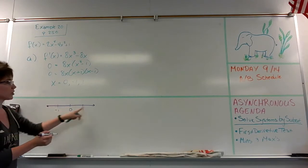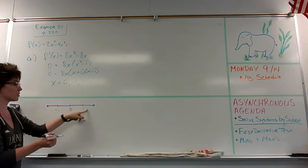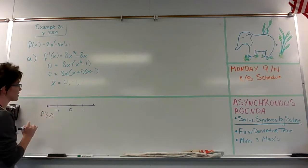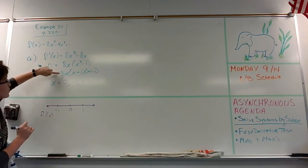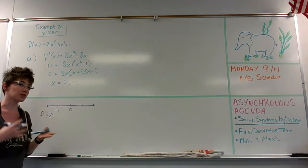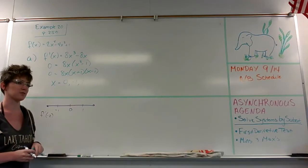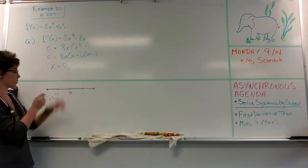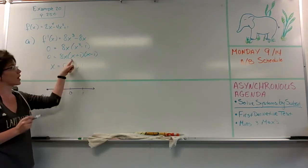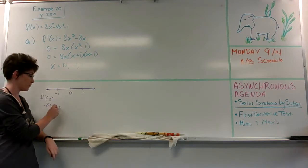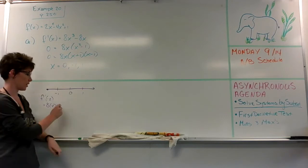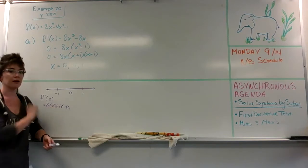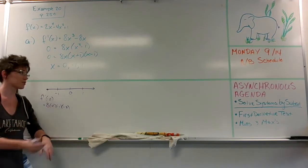I'll be choosing values within each interval to determine if the slope is positive or negative. For the first interval, I'll evaluate f prime at negative 2. Using the factored form can save a lot of work — you can see if the factors themselves are positive or negative. Plugging in negative 2: I get 8 times negative 2, times (negative 2 plus 1) which is negative 1, times (negative 2 minus 1) which is negative 3. That gives me 3 negatives multiplied together, so the result is negative overall.